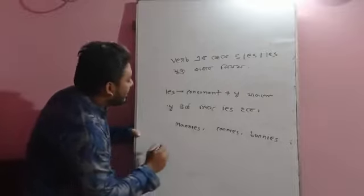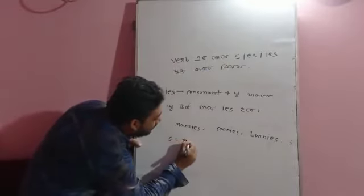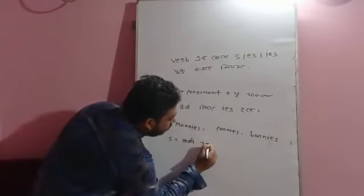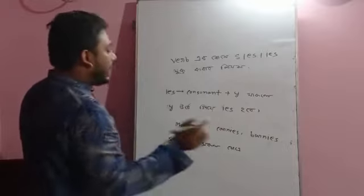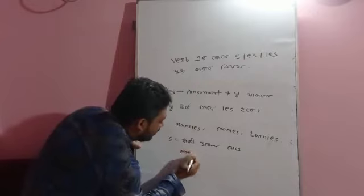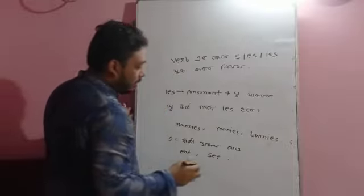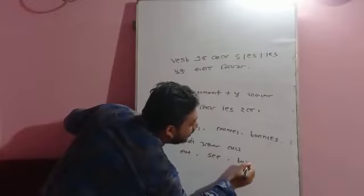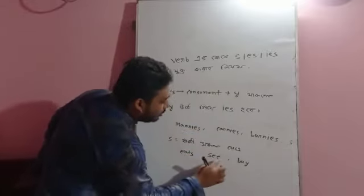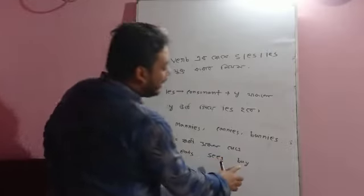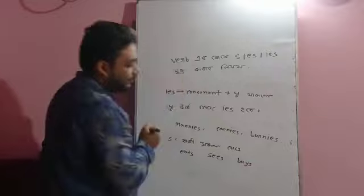When there is S in any verb, we add S. Otherwise, in other cases, we add ES. Let me give an example: eat becomes eats, pack becomes packs. When there are two vowels before S, we just add S.